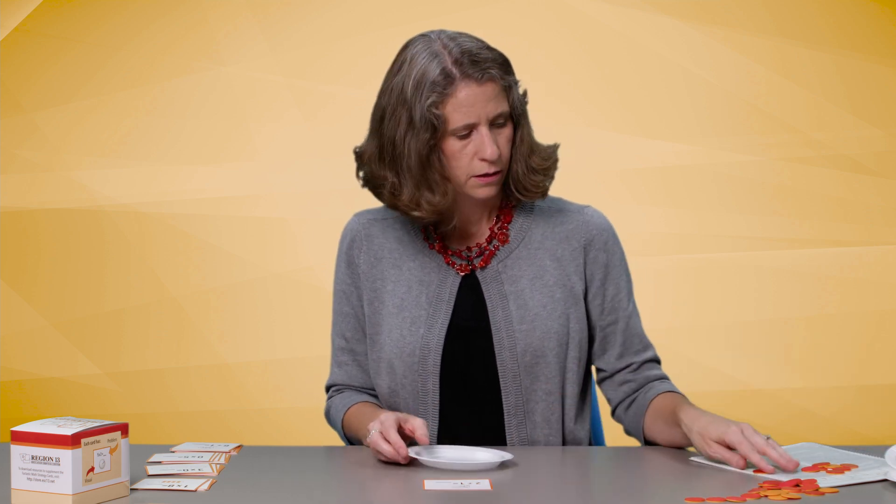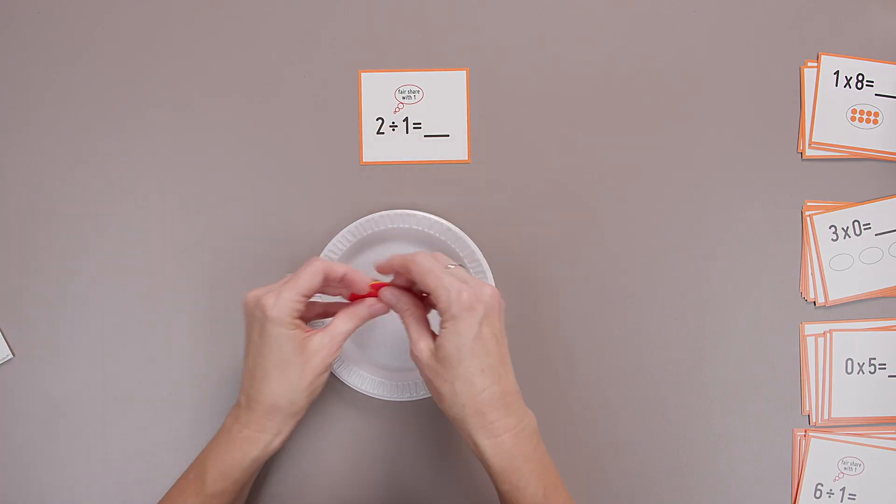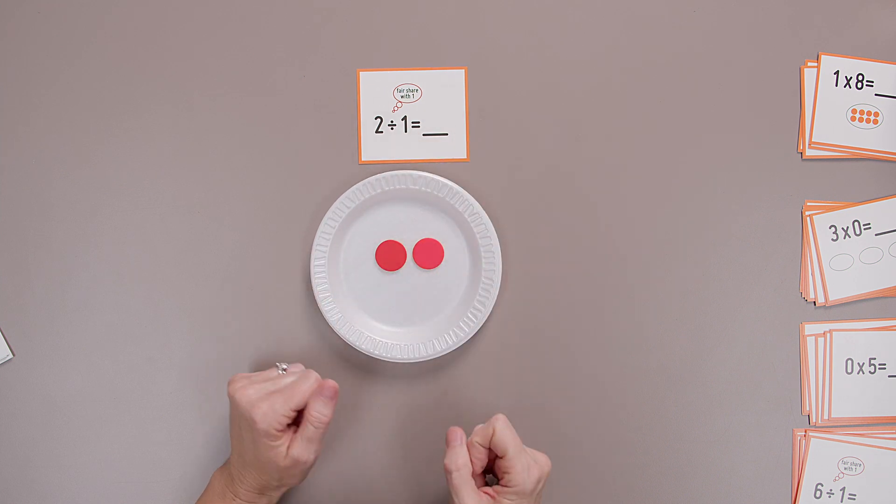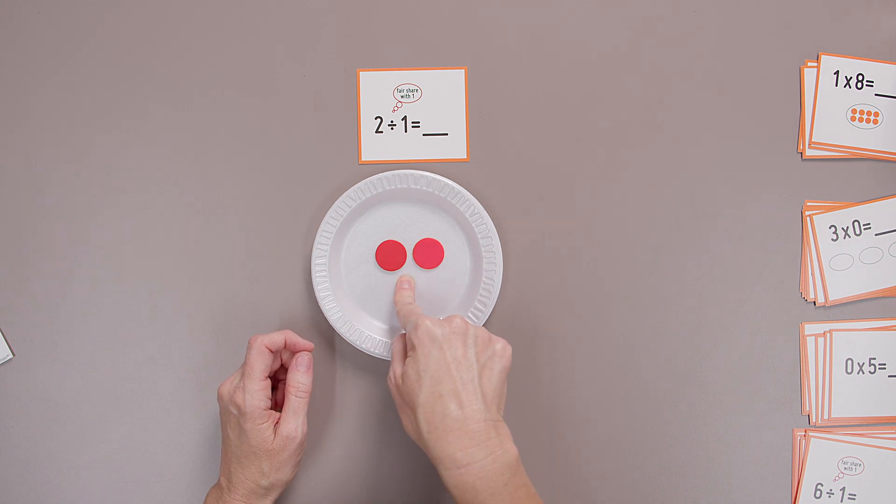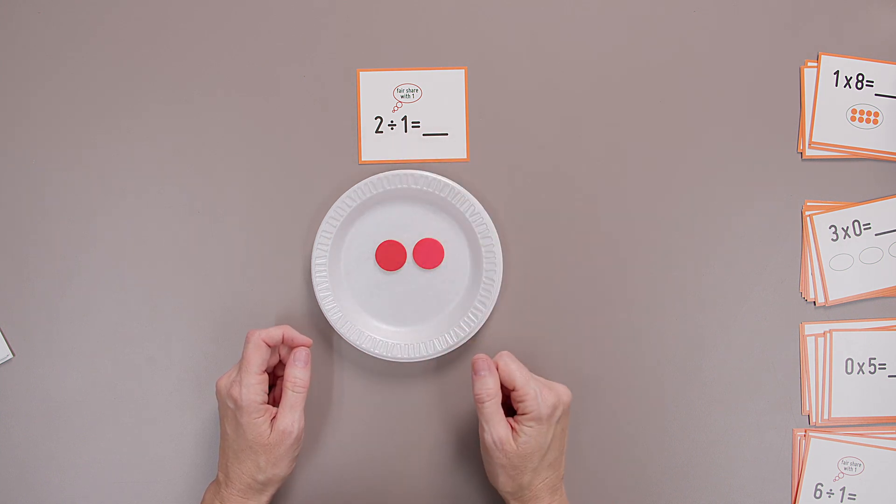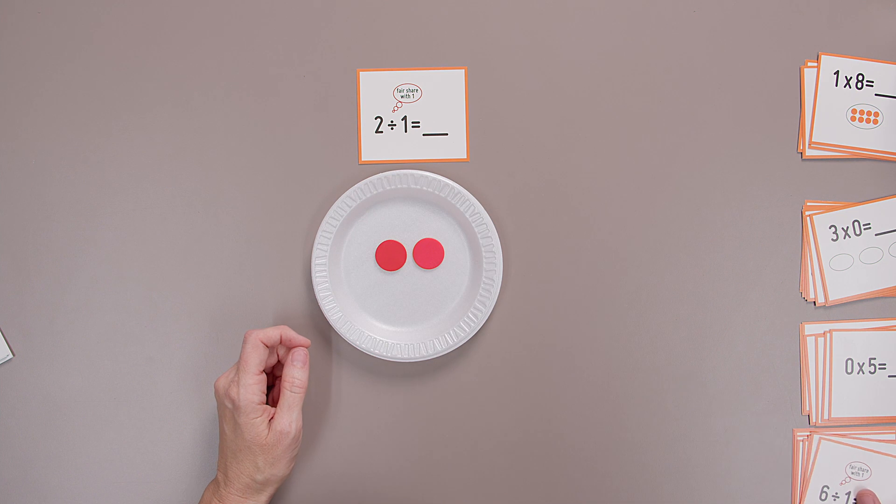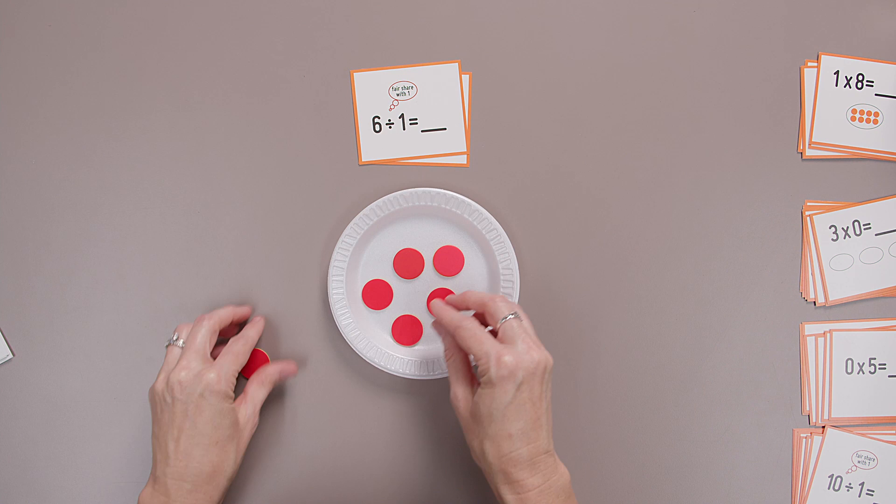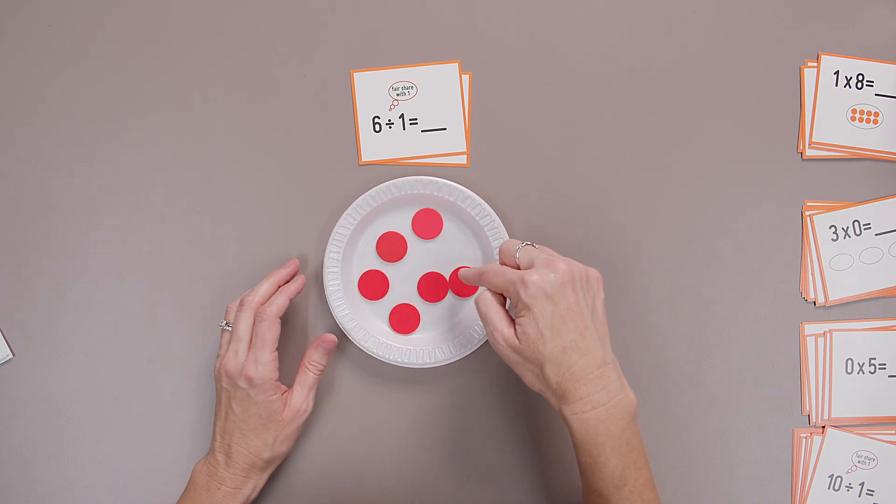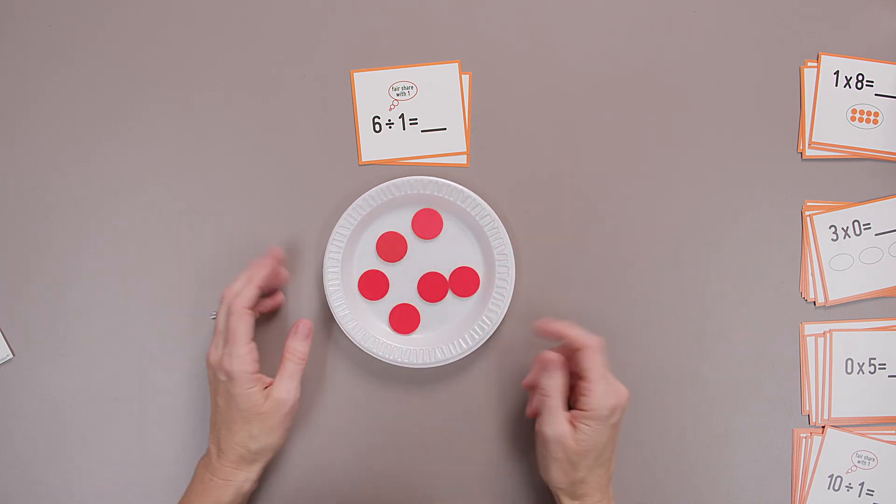Let's throw in one more. How about some division? Remember that fair share? So I have a group of two. And I'm going to fair share with one. Put my two counters in one plate. It's two. Two divided by one is two. How about six? I have six counters. Let's see what happens. Six counters, and I put them in one group. Six. Yeah, that number stays the same. It's six. Excellent.